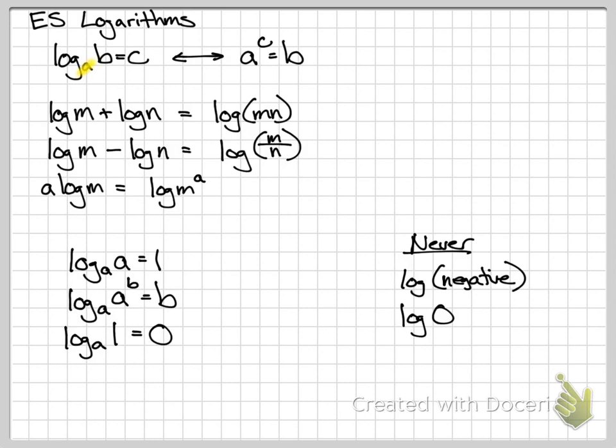You take whatever the base is, and that's the base of your exponent. Notice how the A and the B are on the same side initially. When you go to rewrite it, the A is now with the C, and then the B is by itself. So rewriting from log form to exponent form and exponent form to log form is super important.